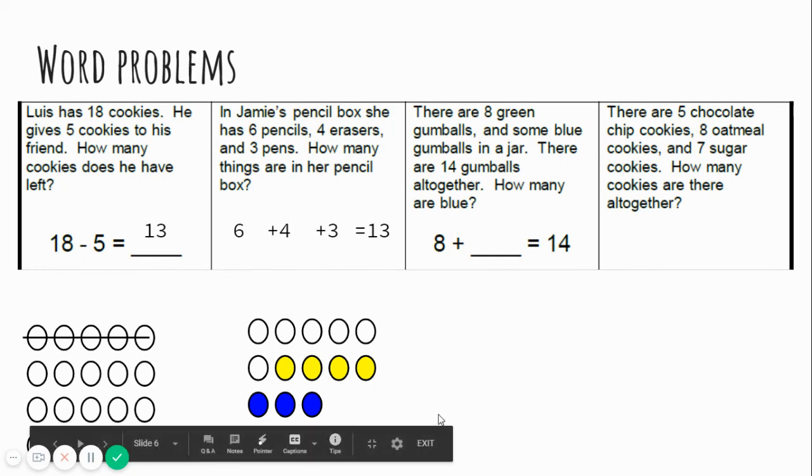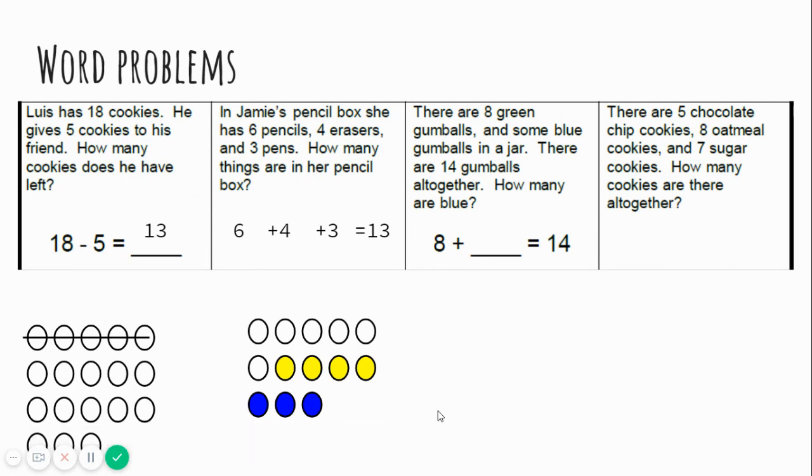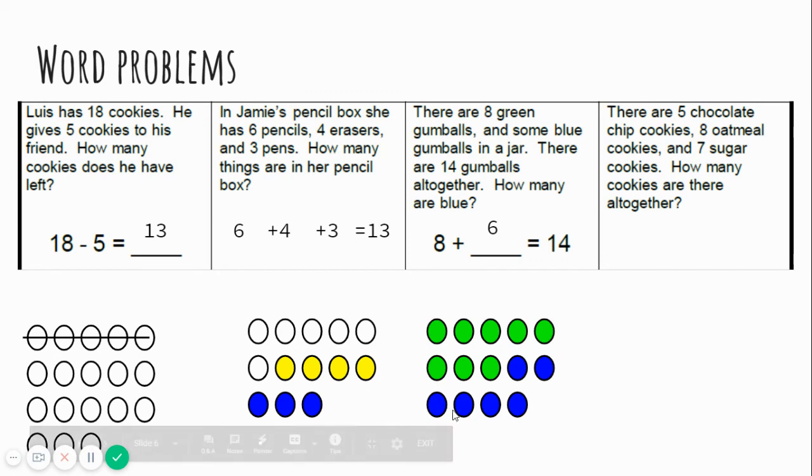Next one. There are eight green gumballs and some blue gumballs in a jar. There are fourteen gumballs all together. How many are blue? There are eight green gumballs and some blue gumballs in a jar. There are fourteen total. How many of them are blue? Let's count the blue ones. One, two, three, four, five, six. Eight plus six equals fourteen. There were six blue gumballs.